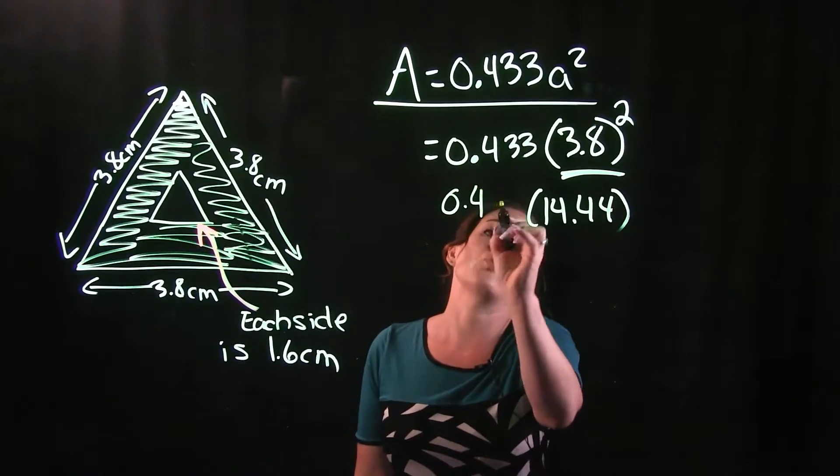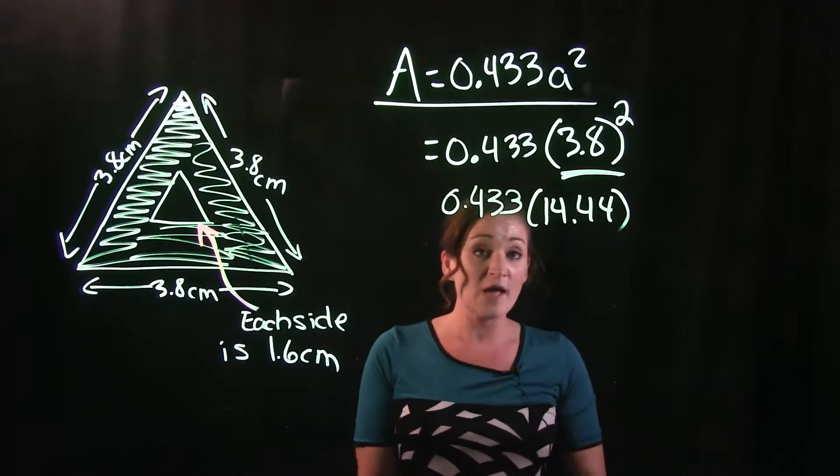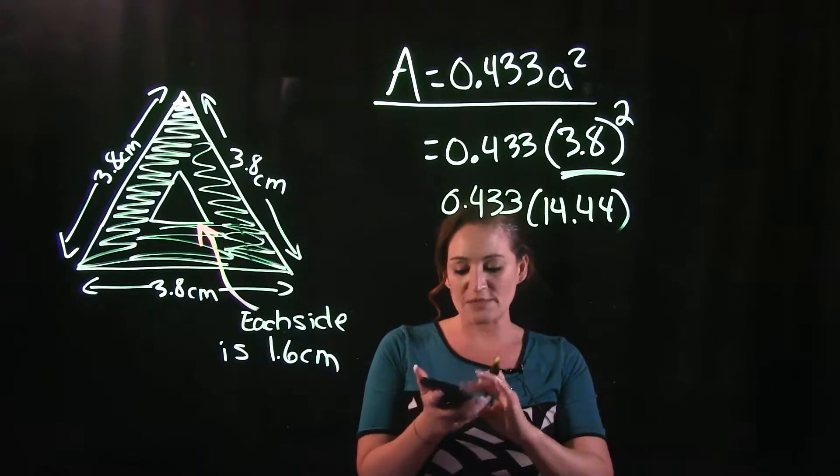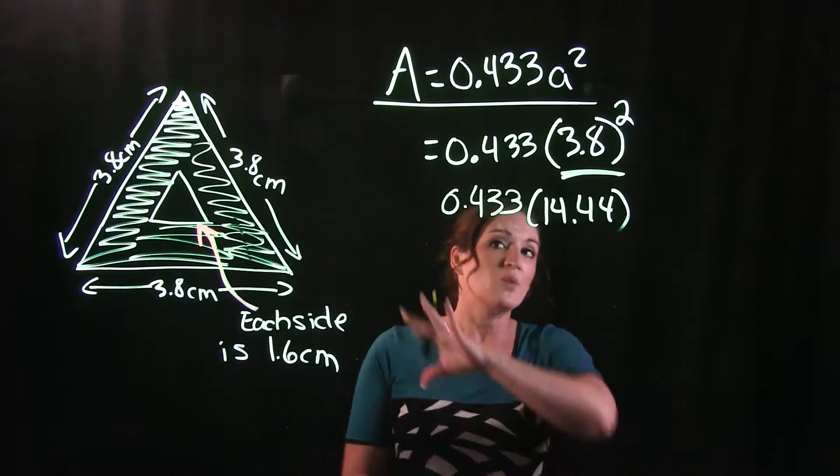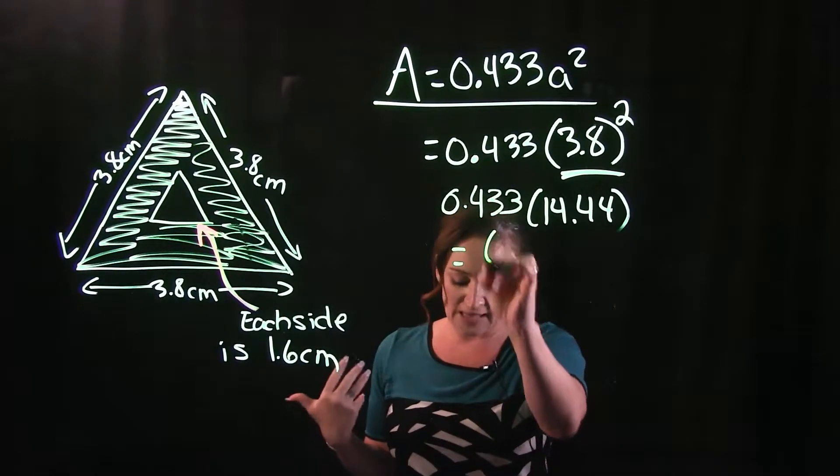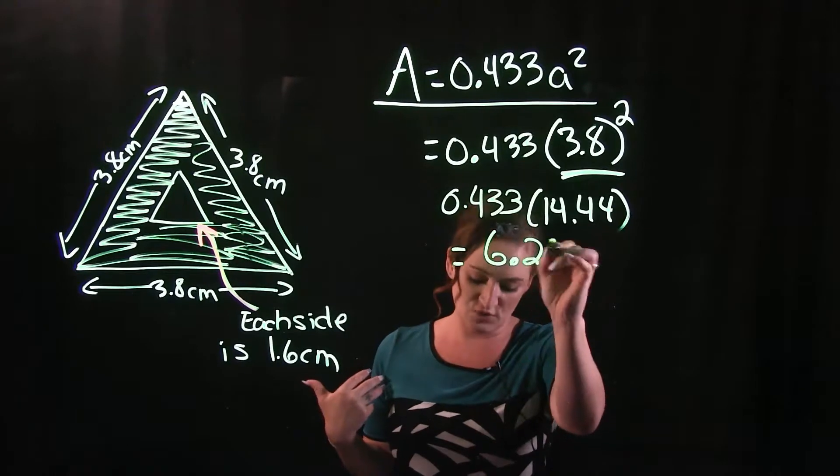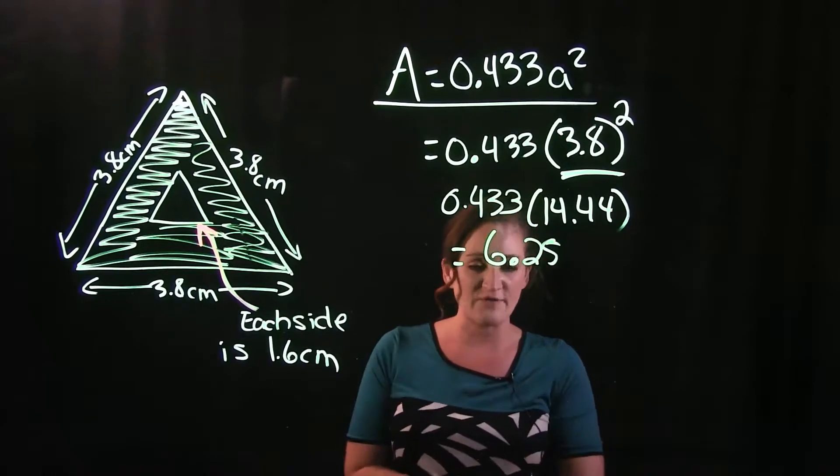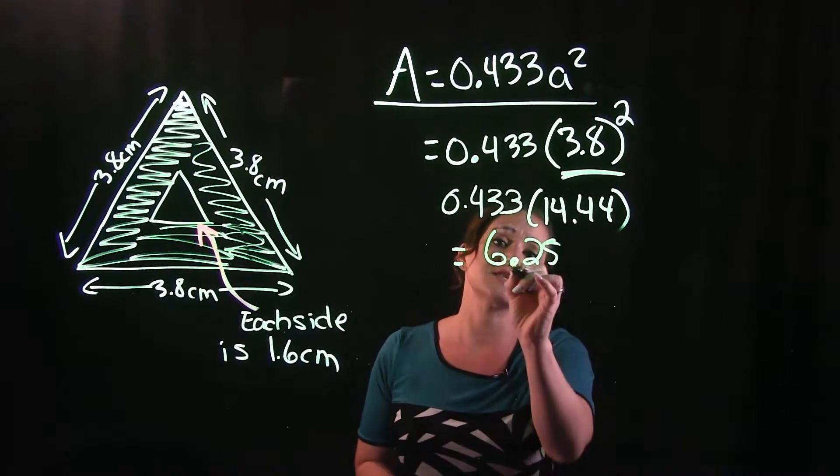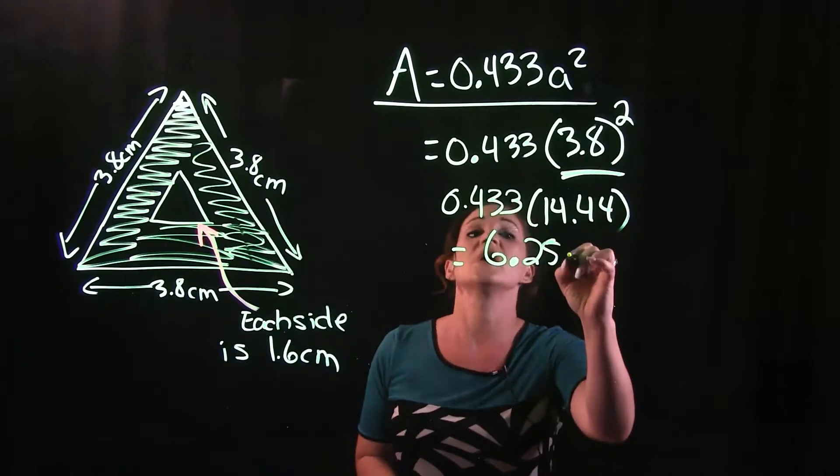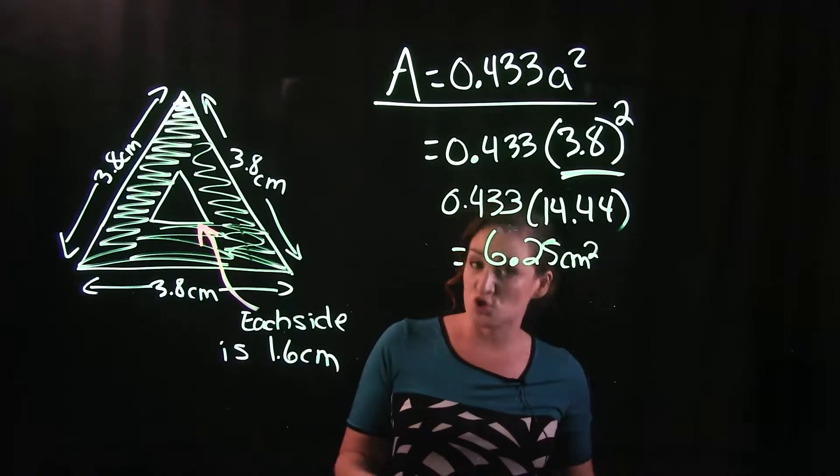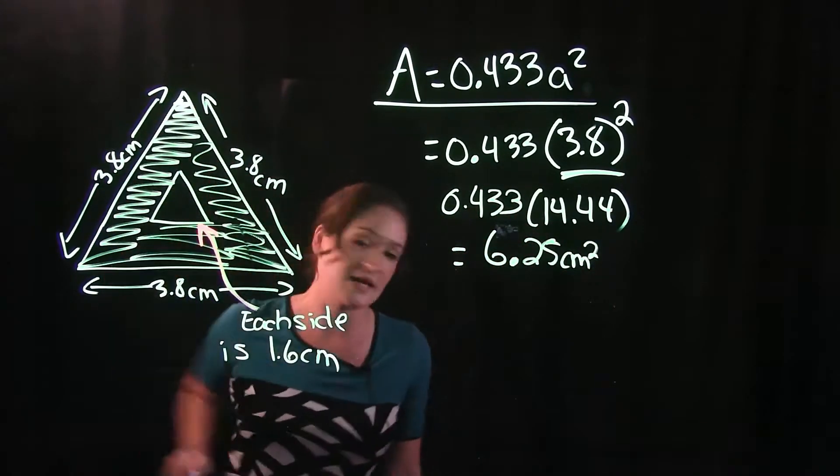3.8 times 3.8 is giving us 14.44. And we need to drop down that 0.433 in front so that we can wrap up this multiplication here. When we multiply that together, I am getting 6.252525 and so on. I'm going to leave this to 6.25, and this would be centimeters squared for the entire area here.